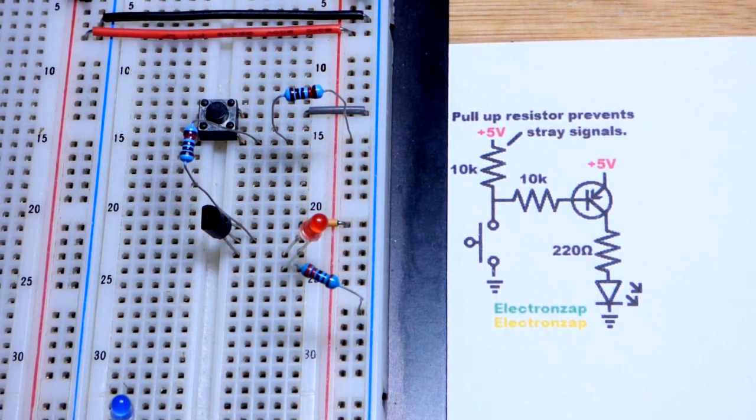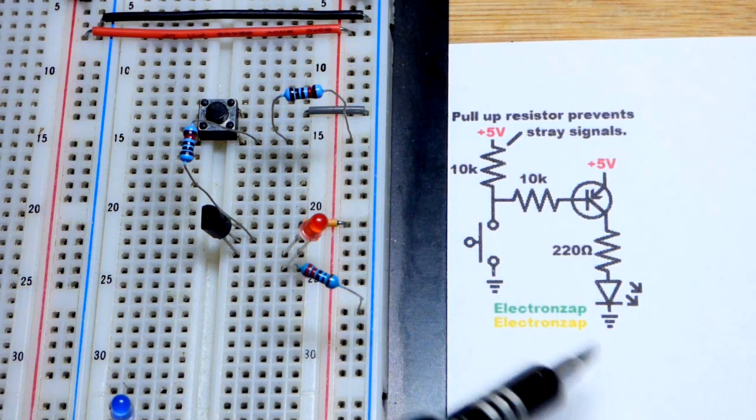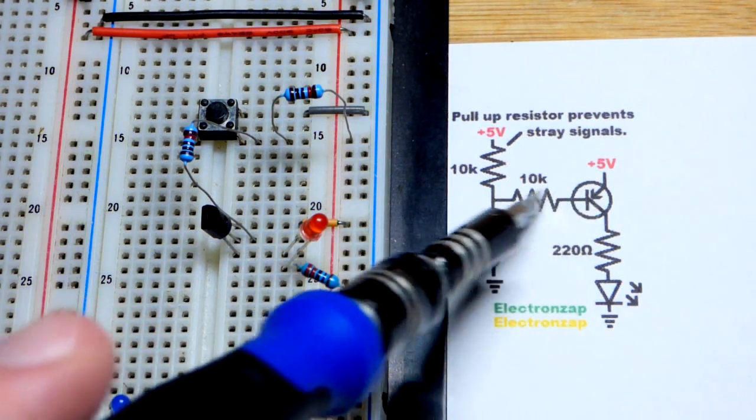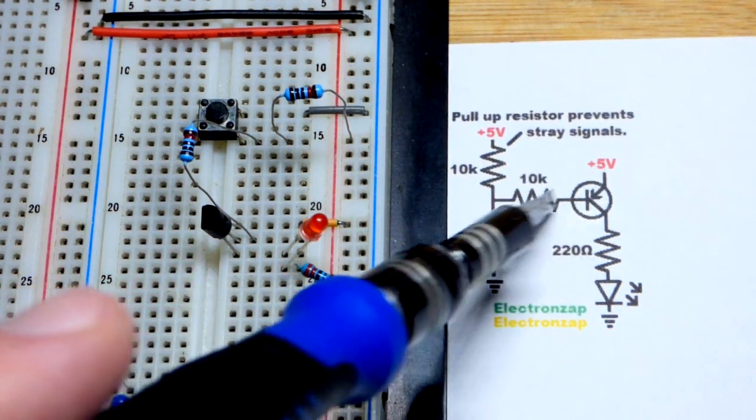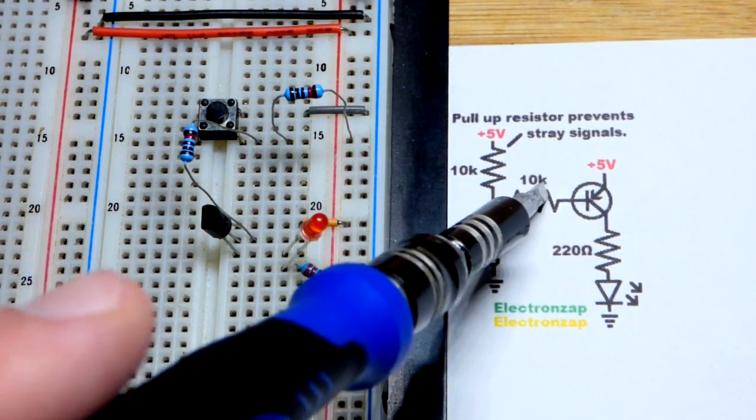This one is a bipolar junction transistor. We still need some current to go into the base, actually out of the base in this one, so we have a resistor there.